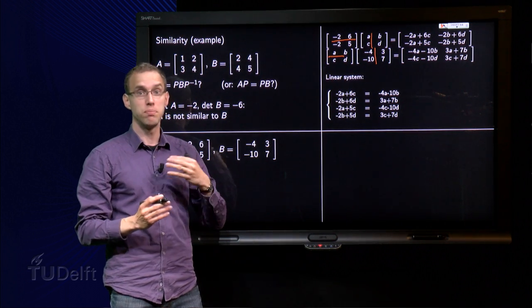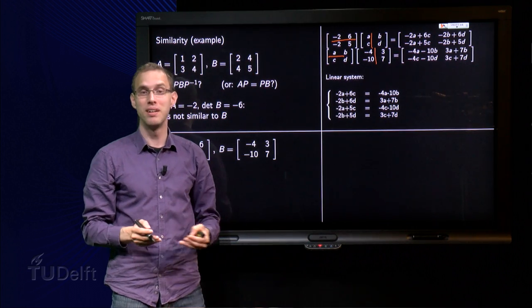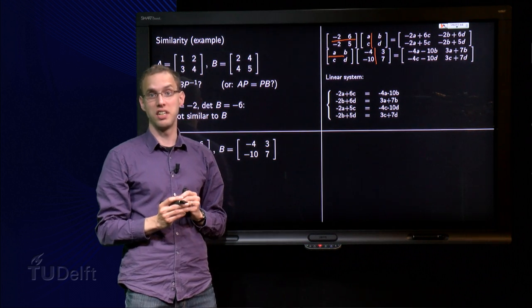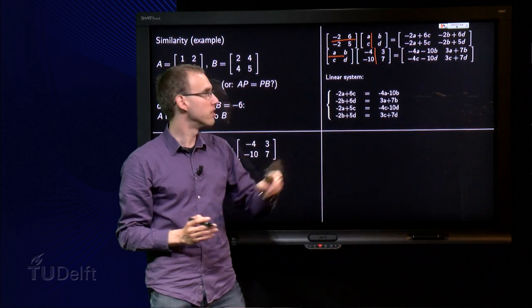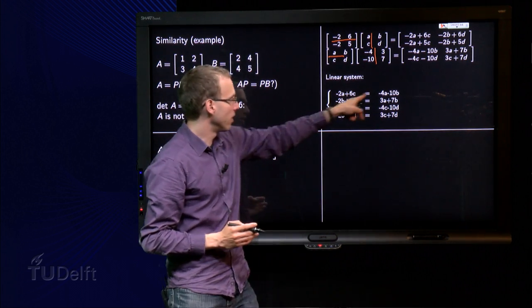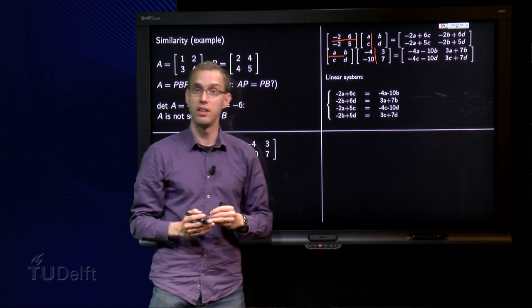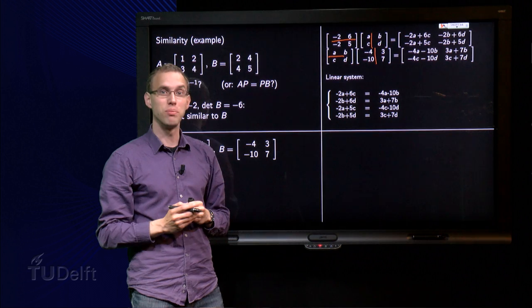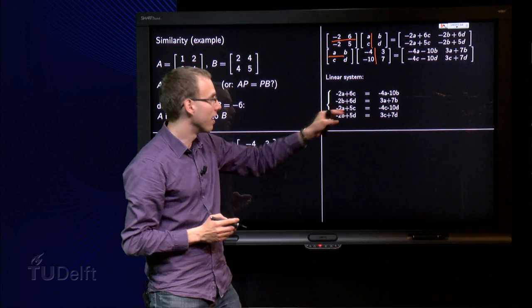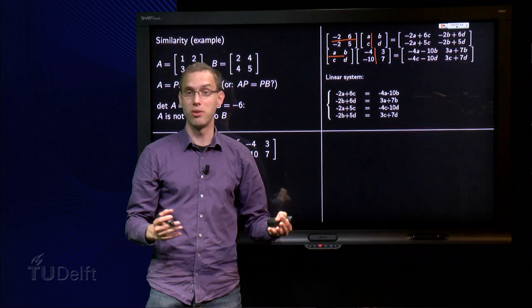Those two matrices over here, they have to be the same. So the two matrices are only the same if all entries are the same, so that means that those four entries all have to be the same. So minus 2A plus 6C equals minus 4A minus 10B, that equation over there, and you also have the three other entries. They all have to be equal. And now you see something nice. What do we have? We have four unknowns, A, B, C, and D, and four linear equations. So we have a linear system of equations, and we know how to solve it.